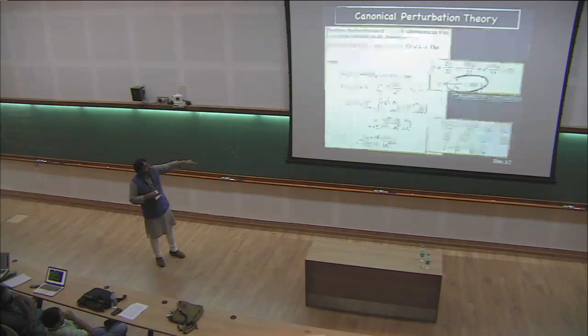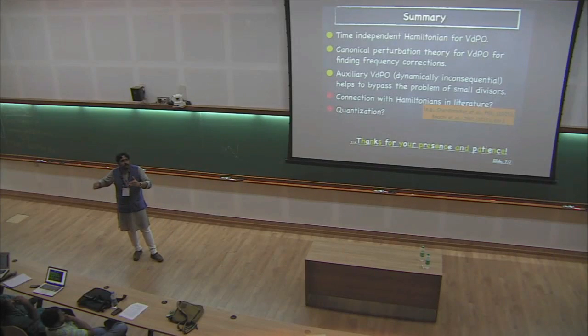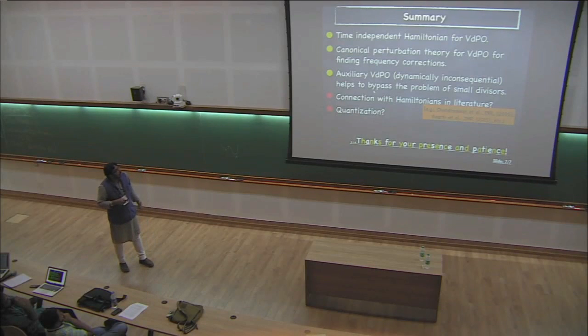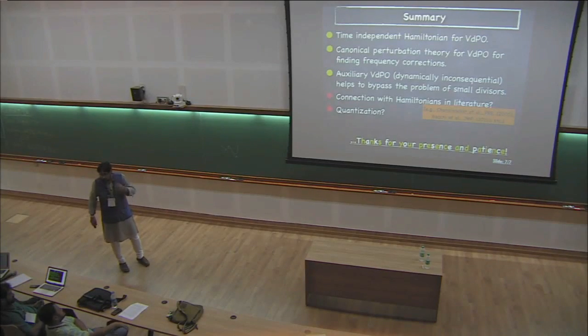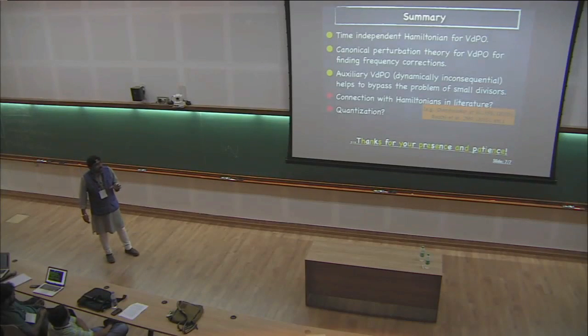The good thing was, I'm only interested in the Van der Pol oscillator dynamics, not in the auxiliary Van der Pol equation dynamics. I could choose whatever initial condition I want for the auxiliary Van der Pol equation and somehow get rid of the small denominator problem order by order. This formalism helped me to do canonical perturbation theory and bypass the problem of small denominator up to two orders. If you want to go to higher orders, it's better to do Lie perturbation theory.